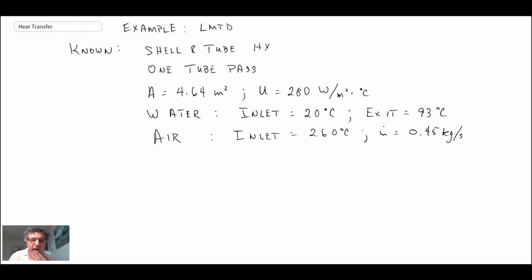Okay, so what we're dealing with is a shell and tube heat exchanger where we have one tube pass. We have the area given, the overall heat transfer coefficient, inlet temperature, exit temperature for the liquid being water coming through. And then we have gas coming through on the other side at 260 degrees C.